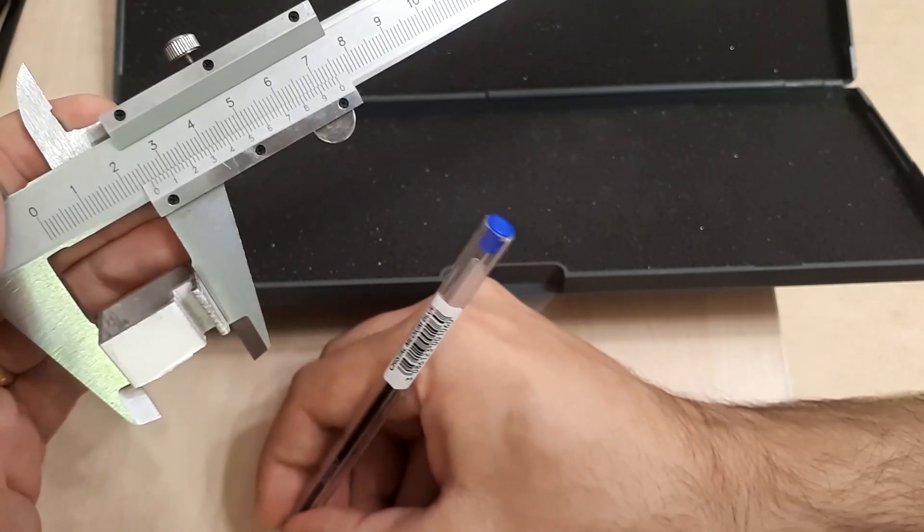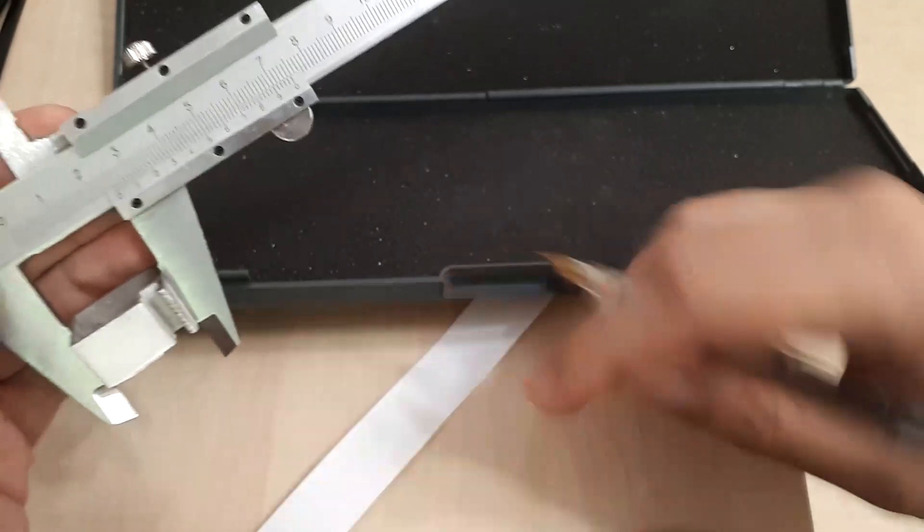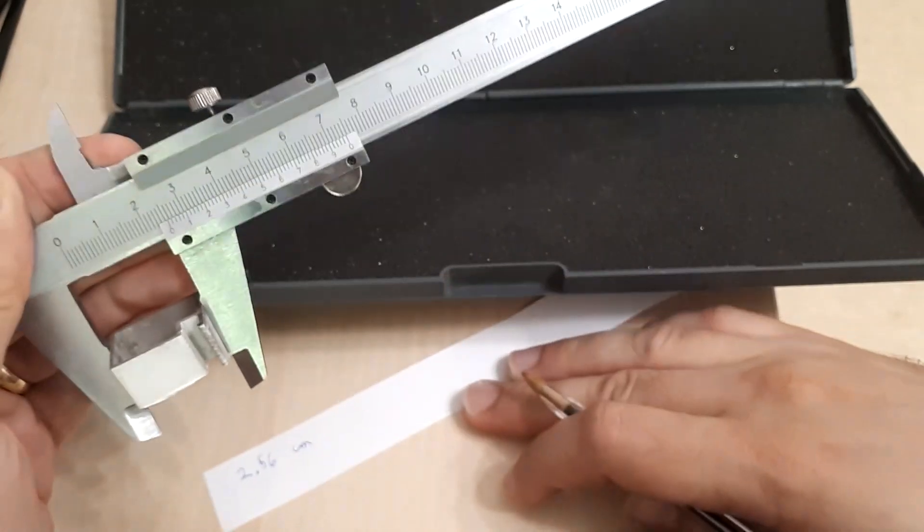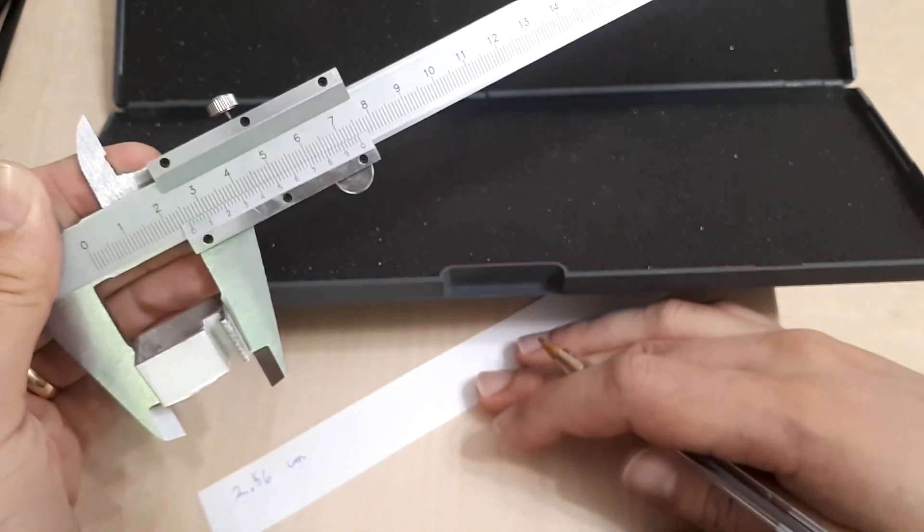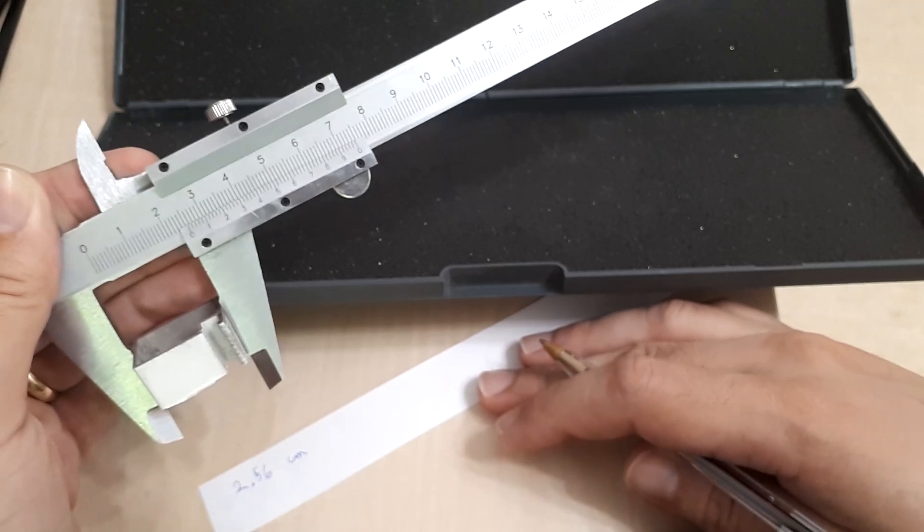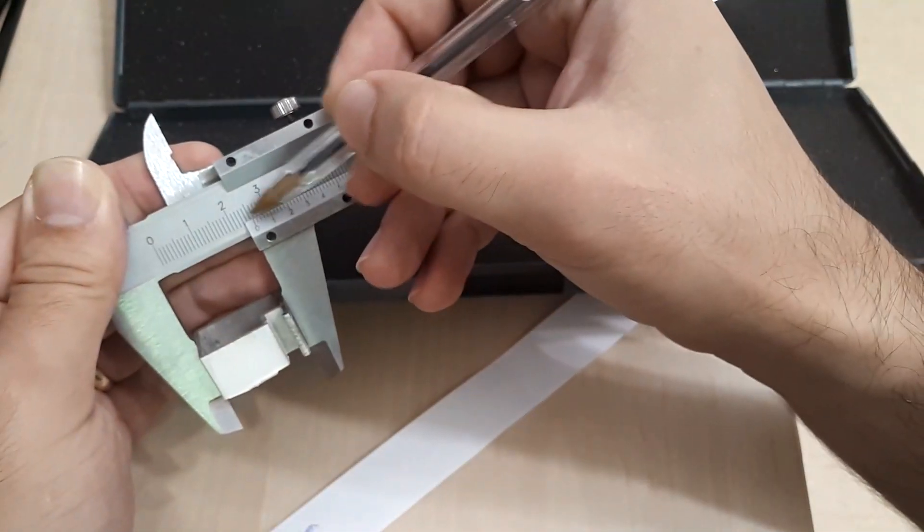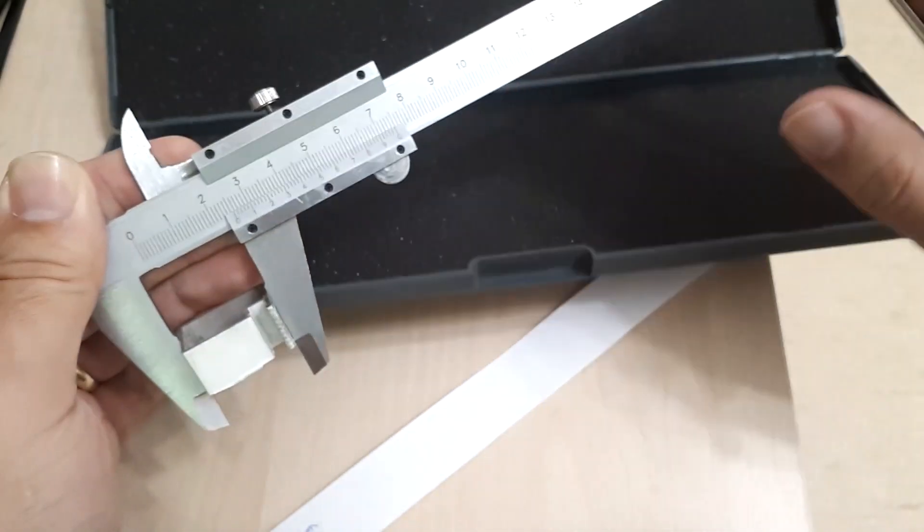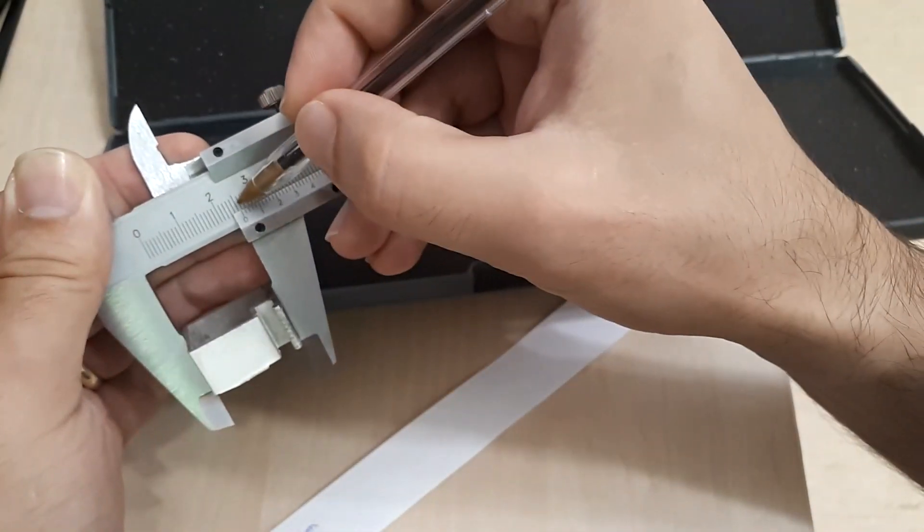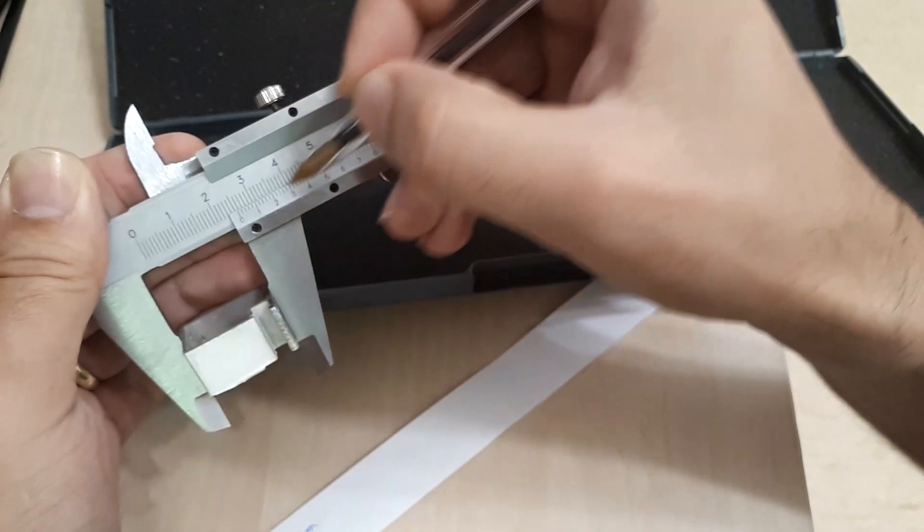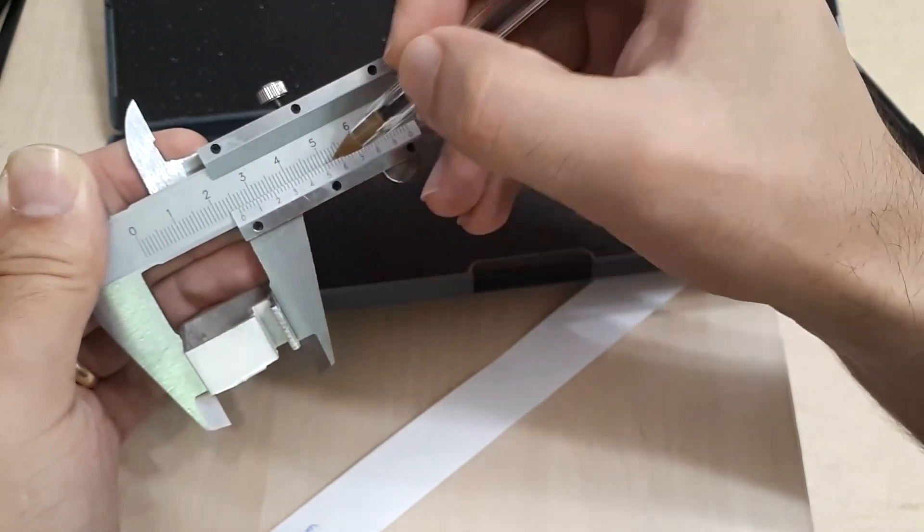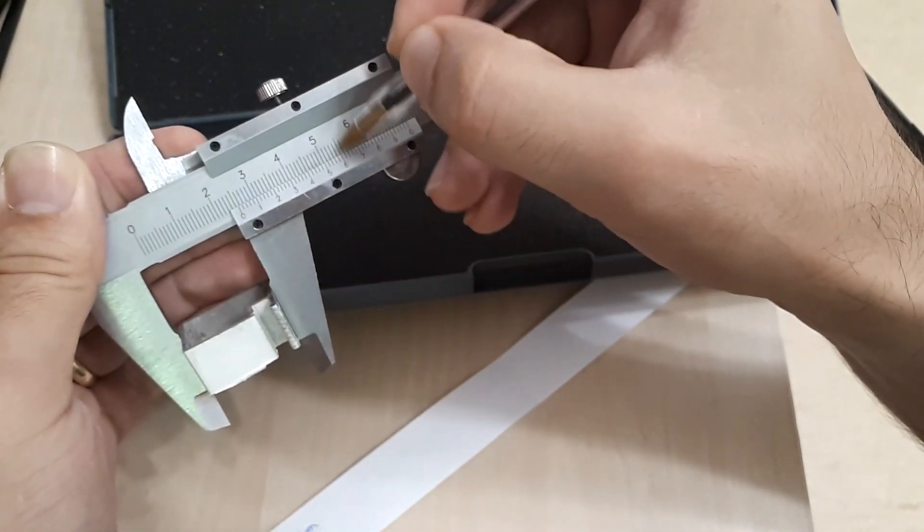Okay so 2.56. As you have noticed it took me at least a couple of seconds to make the measurement because first I want to look and see where the larger scale is placed and then I want to find the division that is perfectly aligned with the main scale on the lower one and this means that it's a 6.